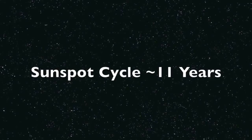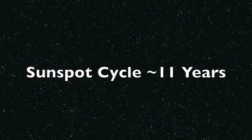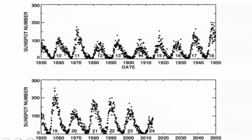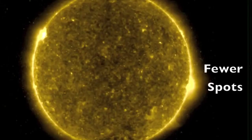The most commonly discussed cycle of the Sun is the sunspot cycle. NASA's official sunspot numbers show an approximately 11-year cycle of high and low sunspot activity. The high activity periods are called sunspot maximum, or just solar maximum, while the periods of low sunspot activity are called sunspot minimum, or just solar minimum.